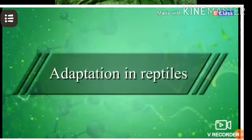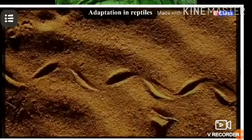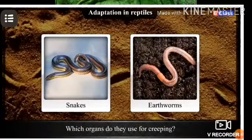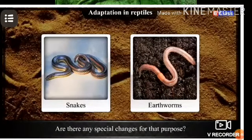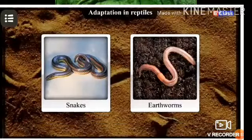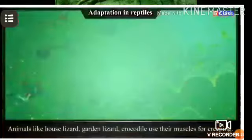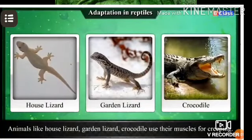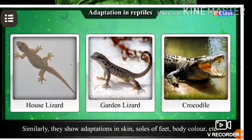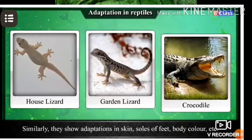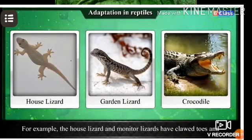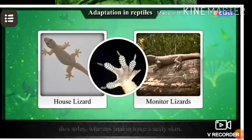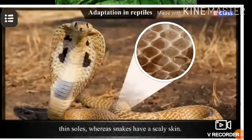In adaptation in reptiles: observe how snakes and earthworms creep and which organs they use. Animals like house lizard, garden lizard, and crocodile use their muscles for creeping. They show adaptations in skin, soles of feet, and body color. For example, house lizard and monitor lizards have clawed toes and thin soles, whereas snakes have scaly skin.